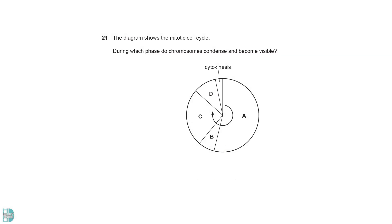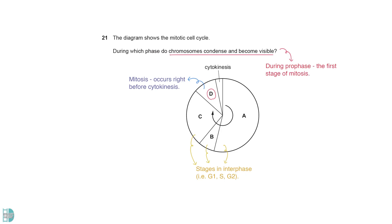A, B, and C are the three stages in interphase. D is mitosis, which occurs right before cytokinesis. Chromosomes condense and become visible during prophase, which is the first stage of mitosis.